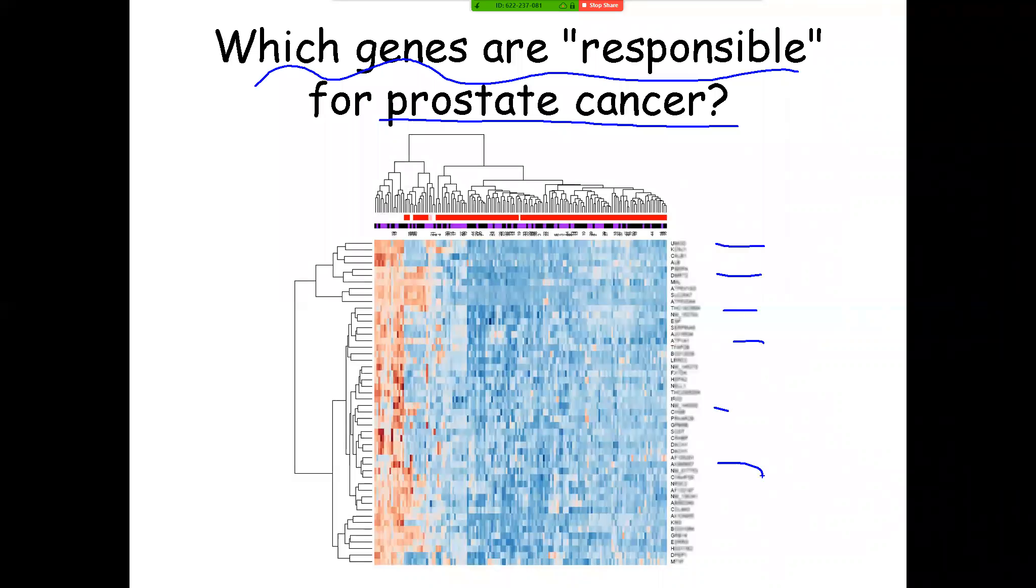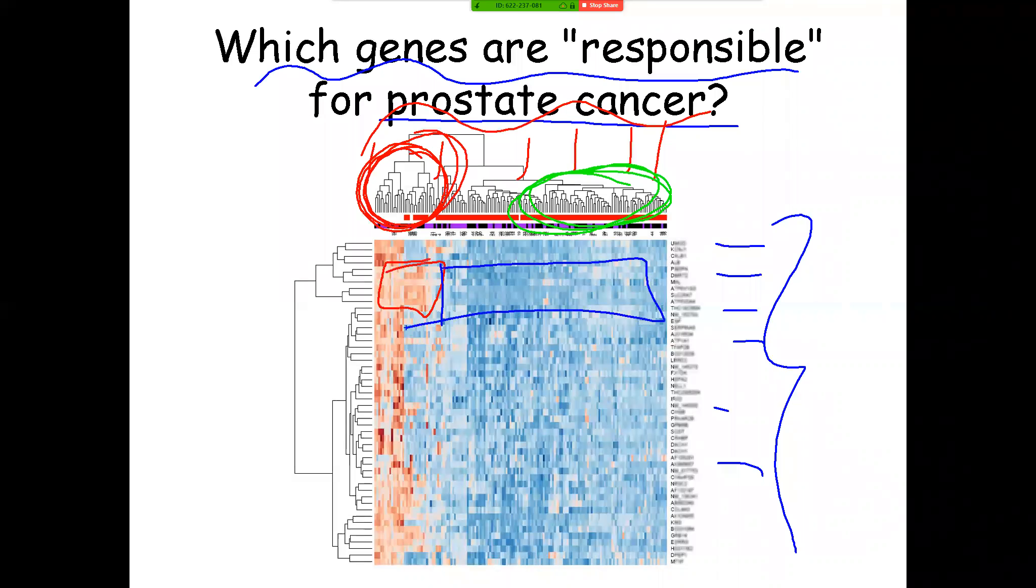Rows represent genes. Columns here represent samples. Some of these samples may be prostate cancer. Some of them may be normal samples. The figure gives you a visual overview of the gene expression levels for all of these genes in all of these samples. Red is high, blue is low. And you can sort of see that this cluster of genes are overexpressed within those samples compared to these other samples.